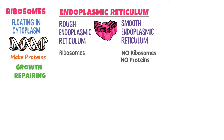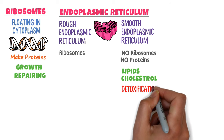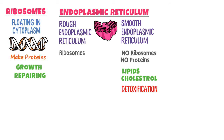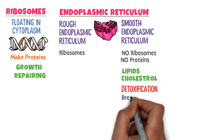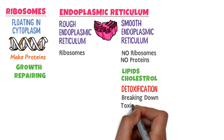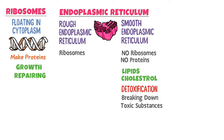It means that smooth endoplasmic reticulum does not produce any protein because it has no ribosomes. But it produces lipids or cholesterol. Secondly, it also does detoxification — meaning the breaking down of toxic substances within the cell.